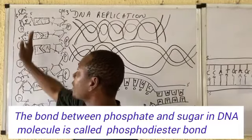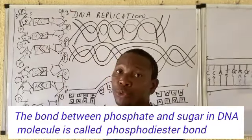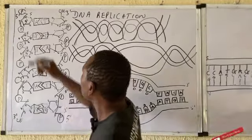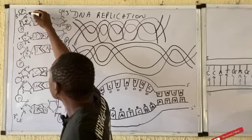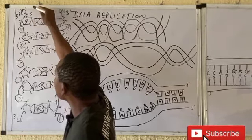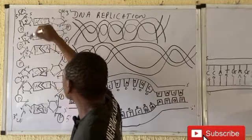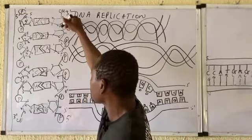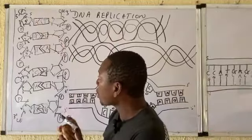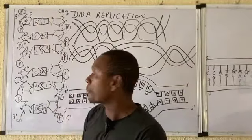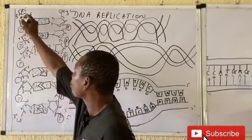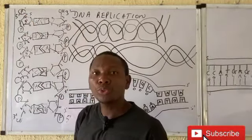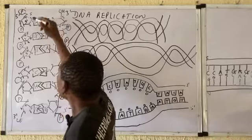You hear statements that one strand is moving in one direction while the other is moving in the opposite direction — they are anti-parallel. Take a look at this sugar structure: one strand is moving in the direction of 3' to 5' prime, and this one is moving in the direction of 5' to 3' prime.